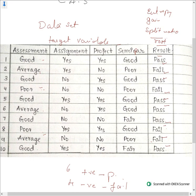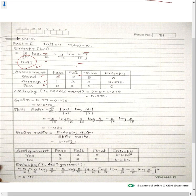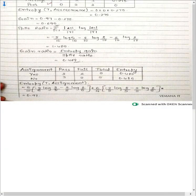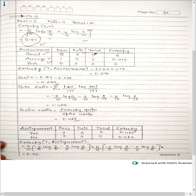By counting, for good we have 5 pass and 0 fail — totally 5 instances of the good attribute. For average we have 1 pass and 2 fail — totally 3 instances. For poor we have 0 pass and 2 fail — totally 2 instances. The entropy for good is 0 because all 5 instances belong to one class (pass).